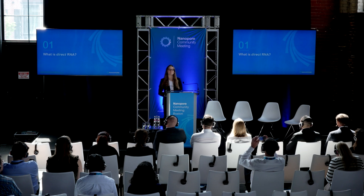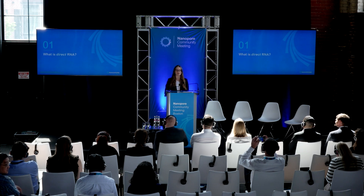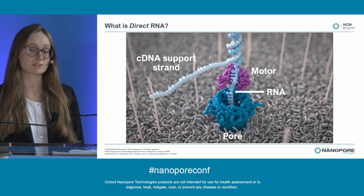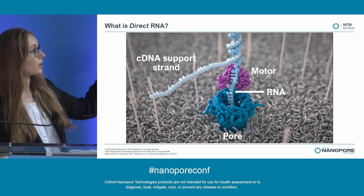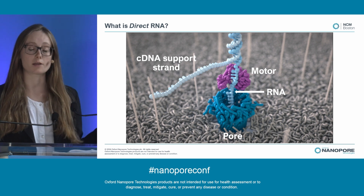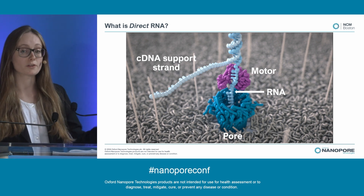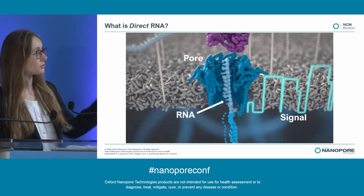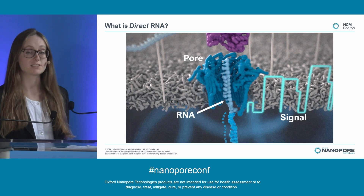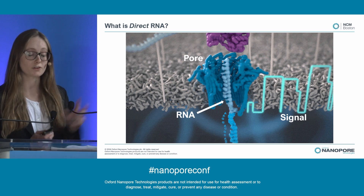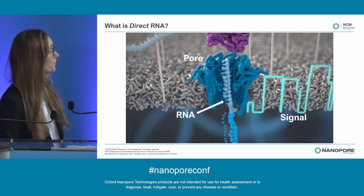So first of all, what is direct RNA? With the Oxford Nanopore platform, you can sequence molecules by putting them through a nanopore. In the case of direct RNA, it is the RNA molecule itself that is moving through the pore. And as the RNA translocates through this pore, the signal that is emitted is a result of the content of the RNA molecule itself — so you're getting the information from the RNA.